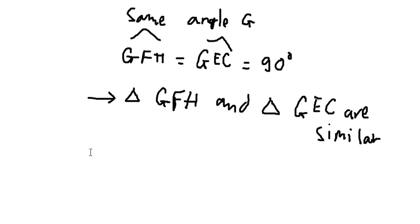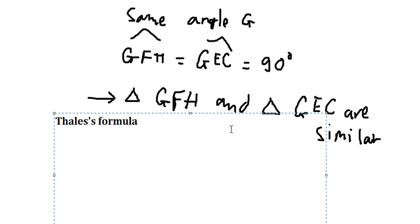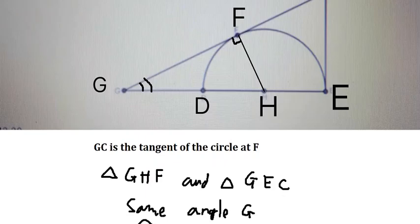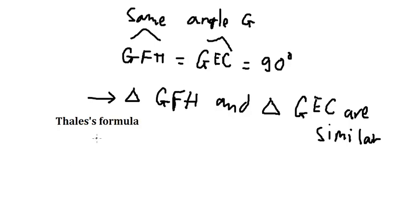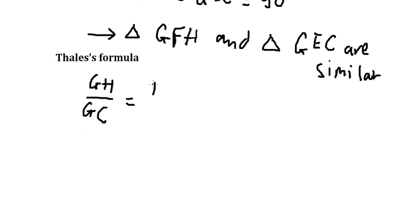We can apply Thales' formula here. That means we have GH over GC equals to FH divided by EC.